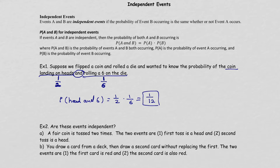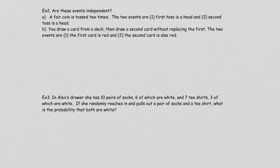That's how you find the probability of two events when the events are independent. Example 2 asks if given events are independent. Event A is when you toss a coin two times: the first event is getting a head on the first toss, and the second event is getting a head on the second toss. Because the second toss is not affected by the first toss, this is an independent event.